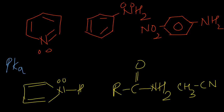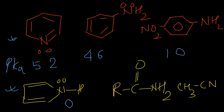So the basic strength order from most basic to least basic is: piperidine and similar cyclic amines (pKa ~11) > ammonia (9.3) > pyridine (5.2) > aniline (4.6) > para-nitroaniline (1) > pyrrole (0) > amide. Cyanide is the least basic of all.